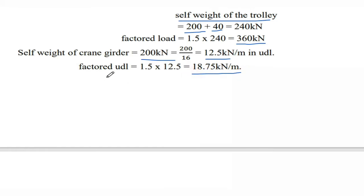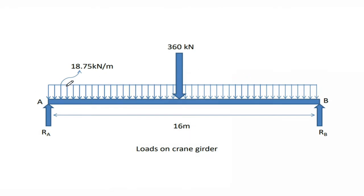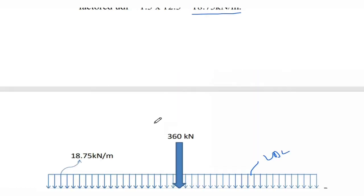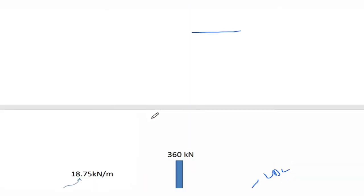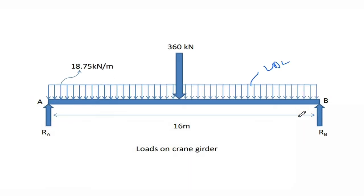This is the loading diagram showing the crane girder. The point load is 360 kN and the UDL represents the self-weight of the crane. RA and RB are the reactions, with total span AB equal to 16 m.